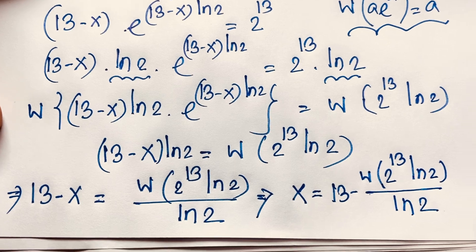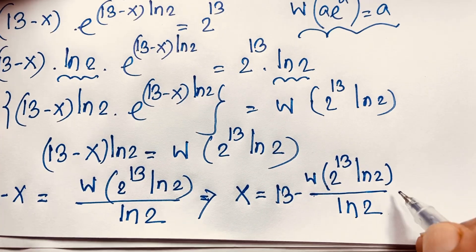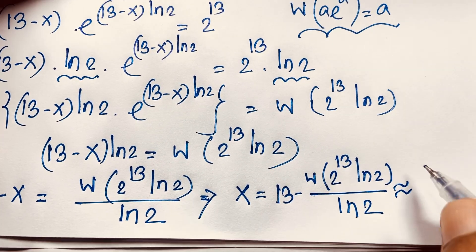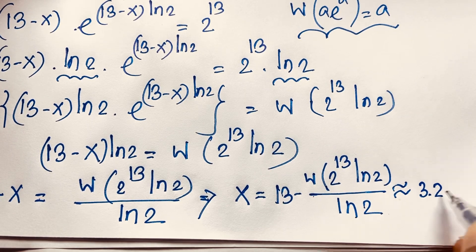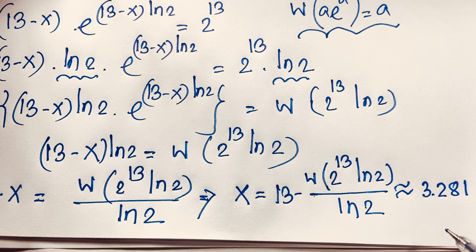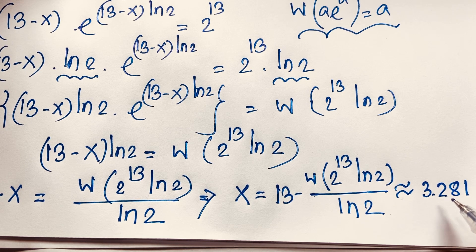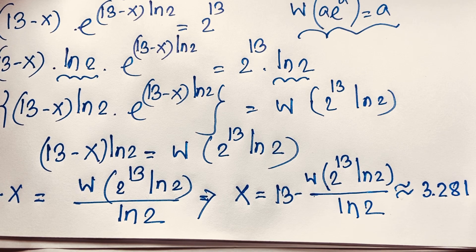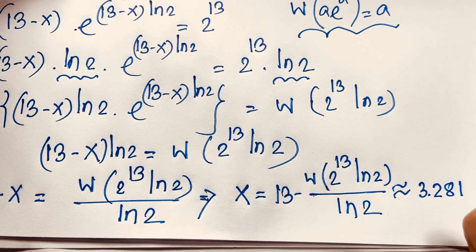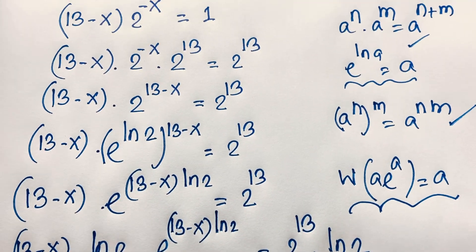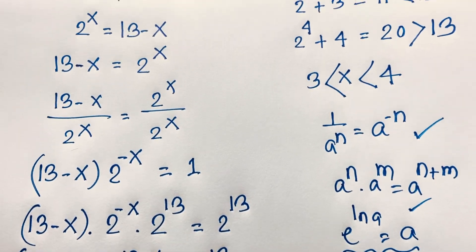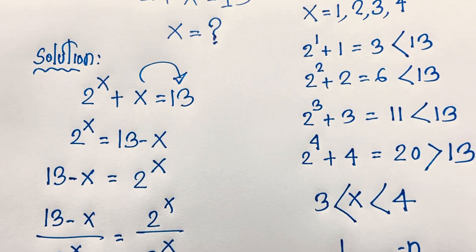Using a calculator, this value works out to 3.281. So our final solution is x is equal to 3.281. This is the value of x in this math olympiad question. In this exponential math problem, I used the Lambert W function. Thank you all — if you enjoyed this math olympiad question, please subscribe to my channel for other interesting videos. Goodbye, take care.